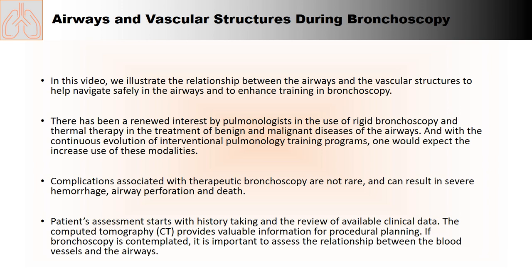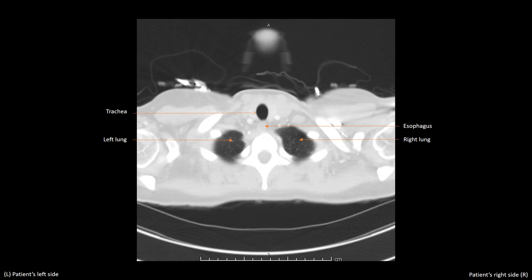Complications associated with therapeutic bronchoscopy are not rare and do happen. They can result in severe hemorrhage, airway perforation and death. Patient assessment starts with good history taking and the review of available clinical data. Chest CT provides valuable information for procedural planning. If bronchoscopy is contemplated, it is important to assess the relationship between the blood vessels and the airways around the area of interest. Please be advised that in the following slides, we purposefully flip the images to simulate real-life navigation.